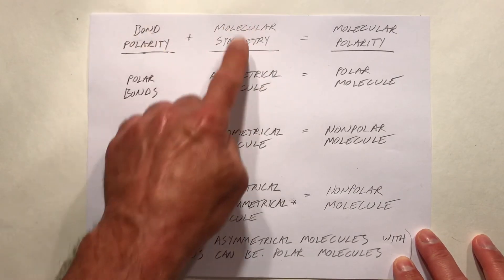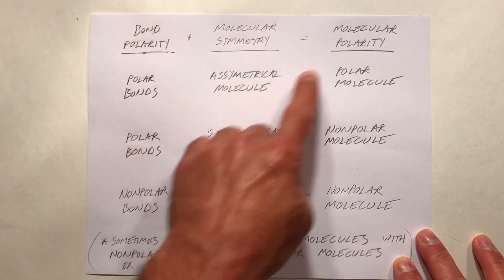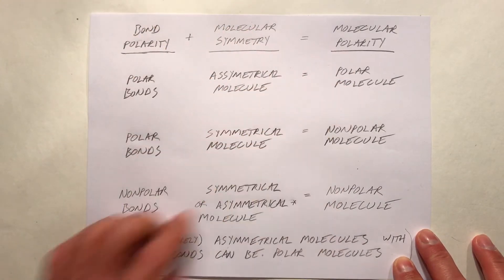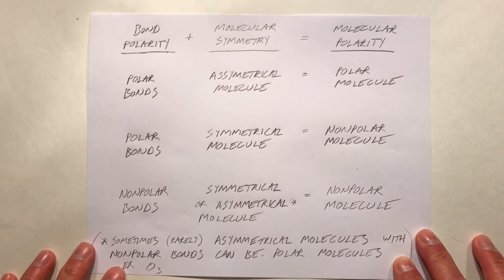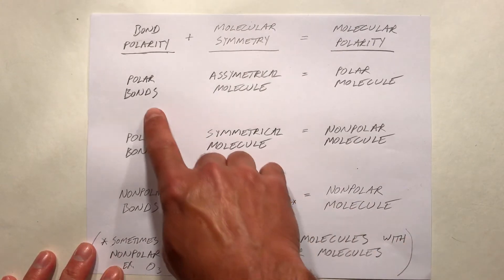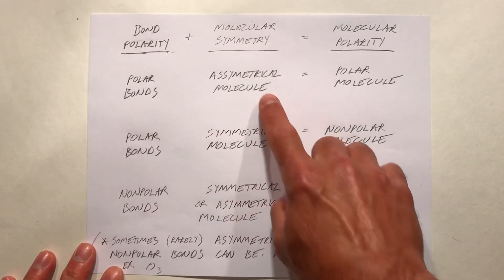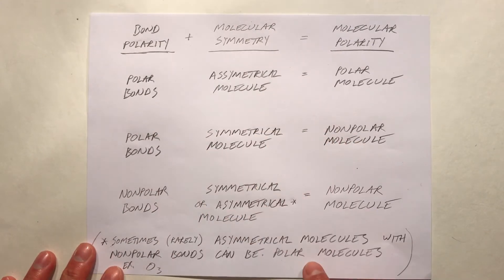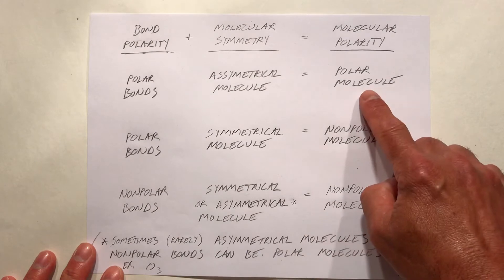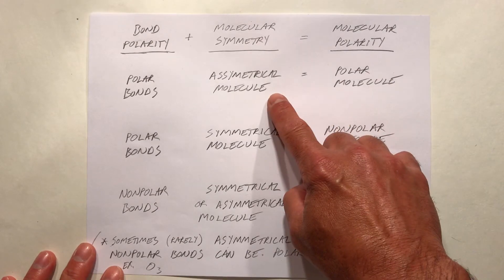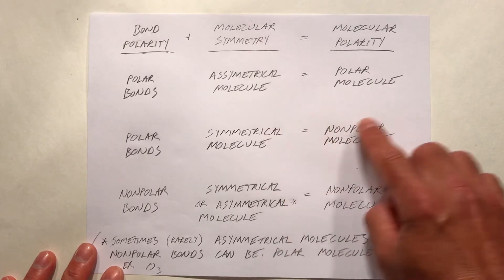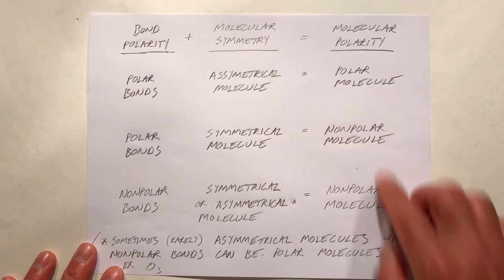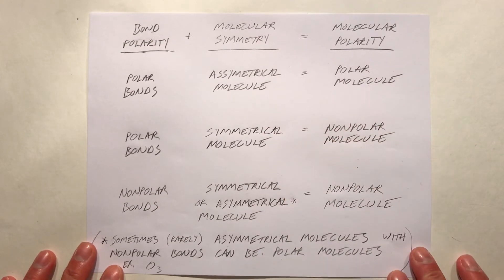We can make general categories based on bond polarity and molecular symmetry, combine those two things, and determine molecular polarity. If we have polar bonds and an asymmetrical — that is, unbalanced — shape to the molecule, we're going to get a polar molecule.